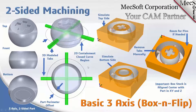Let's talk about basic three-axis two-sided machining — I'm calling this 'box and flip.' The box refers to box stock: a standard block where you provide the X, Y, and Z dimensions. Starting over here on the left at the top, this is the part we're illustrating. We have the top view, front view, and bottom view. There are features on both the top side and the bottom side, and obviously features around the perimeter.